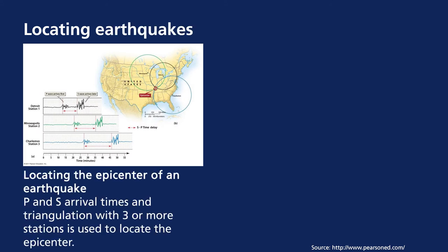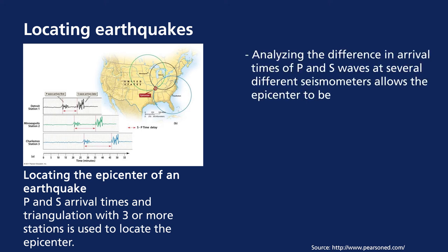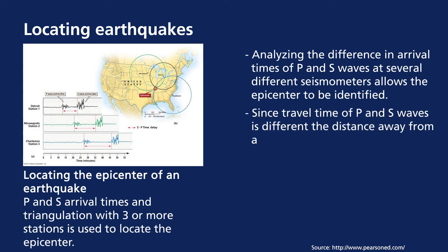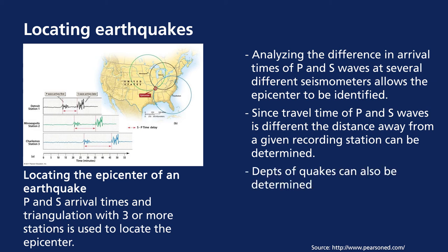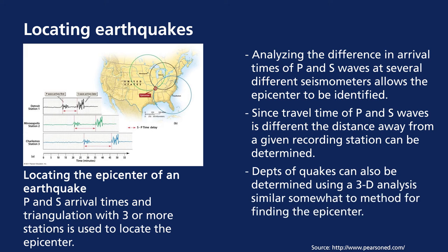To locate earthquakes, you analyze the P waves and S waves measured by seismometers, which can identify the focus and epicenter of the earthquake. You need at least three seismometers to triangulate this center, measured by the travel time of P and S waves at different distances. Depths of quakes can also be determined to find the exact focus, requiring a 3D analysis of the ground motion.